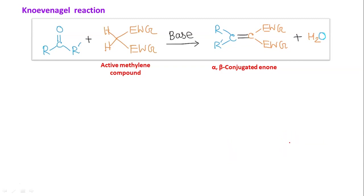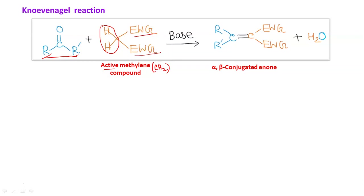In the last part, that is part 17, I discussed the Stobbe reaction. In the Stobbe reaction there is an aldehyde or ketone — here also we have an aldehyde or ketone depending on the nature of the R and R' group. Another molecule from which the carbanion will be generated is the active methylene compound. Active methylene means the methylene CH₂ group is acidic in nature because we have two electron-withdrawing groups attached to this CH₂.